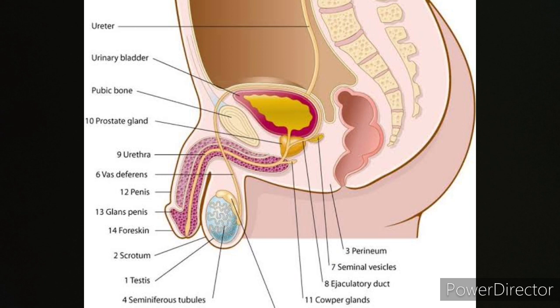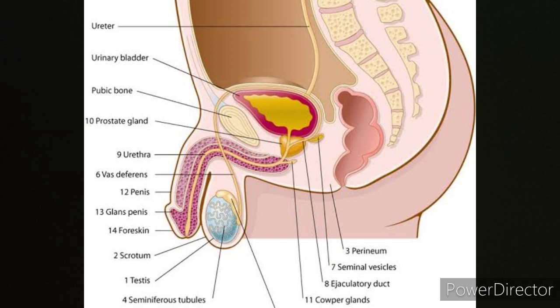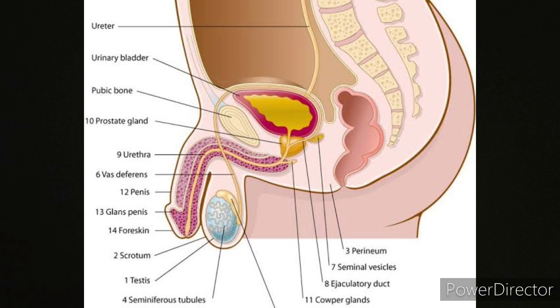Why are the testes located outside the body in a pouch? This particular pouch, the scrotum, helps in maintaining a low temperature of the testes — that is 2 to 2.5 degrees lower than the normal internal body temperature. This lower temperature is necessary for sperm production, that is spermatogenesis.